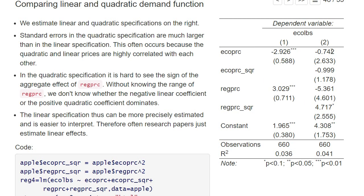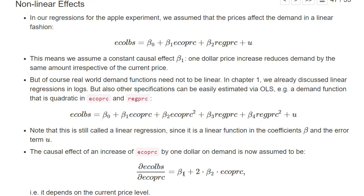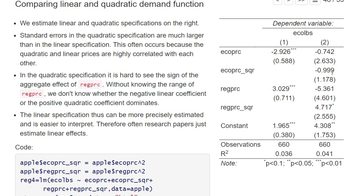We also see that for the ecological apples, both the quadratic term and the linear term are negative. Going back to our formula, if both β1 and β2 are negative, it means the higher the price, the stronger the negative causal effect of a price increase on demand — so if the price is already high and we increase it a little more, demand goes down by more. However, we have very large standard errors and don't find a significant coefficient here, so we shouldn't interpret this quadratic term too strongly.